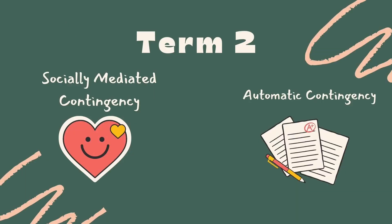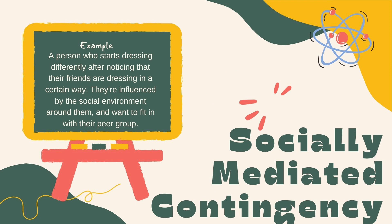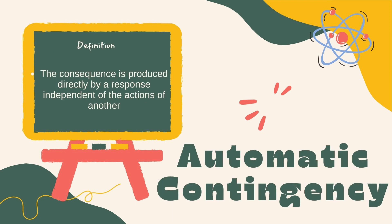The second term is about socially mediated contingency and automatic contingency. Socially mediated contingency refers to a situation where a person's behavior is influenced by the consequences that follow from other people's reactions — in other words, behavior is shaped by the social environment. An example is a child who learns to share their toys because they receive praise and positive attention from parents and friends. Another example is a person who starts dressing differently after noticing their friends dressing a certain way, wanting to fit in with their peer group.